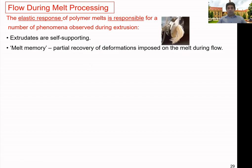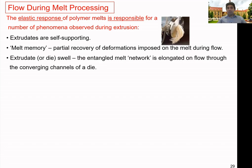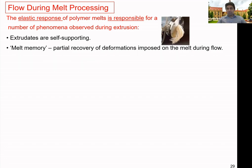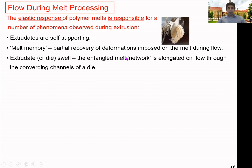Melt memory is another important factor — the partial recovery of deformations imposed on the melt during flow. Material is under compression and pressure when inside the processing chamber, but when it comes out from the machine, it tries to recover some of the deformation. That elastic recovery can create issues like die swell. The entangled melt network is elongated as material flows through the converging channels of a die, and as it exits, it tries to recover some of the stored deformation, creating die swell.